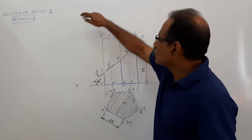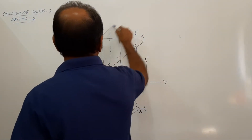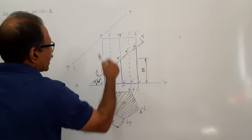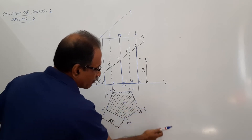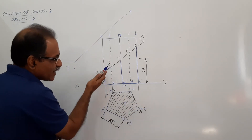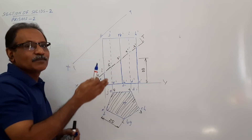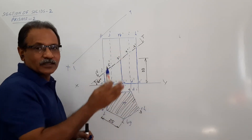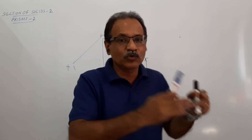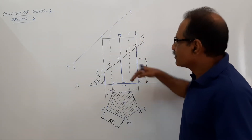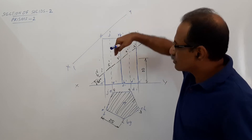So where do you have to look from? You have to look from this side, which means you have to draw an additional true shape. Draw a line parallel to the cutting plane — this is the x1y1 line. It can be drawn here or there; drawing it too close will mix up with the plan, so draw it far away on this side. The cutting plane and x1y1 must be parallel to each other.